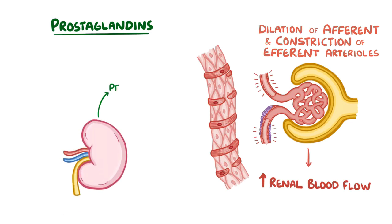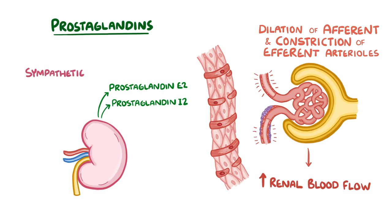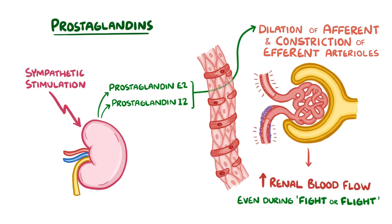Other molecules that lower arteriolar resistance and increase renal blood flow are prostaglandins. The kidneys produce prostaglandin E2 and prostaglandin I2 in response to sympathetic stimulation, causing both afferent and efferent arterioles to dilate slightly — ensuring renal blood flow doesn't get too low even during fight-or-flight situations. After all, the last thing you need after a quick getaway from a kangaroo is kidney damage from too little blood flow.